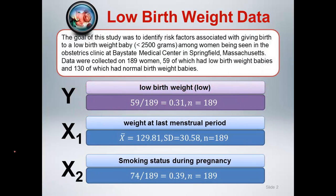We are working with the low birth weight data with a single dichotomous outcome and two independent variables. The first is continuous, weight at last menstrual period. The second is dichotomous, smoking status during pregnancy.